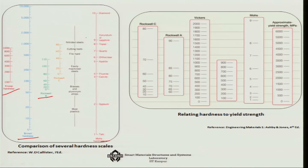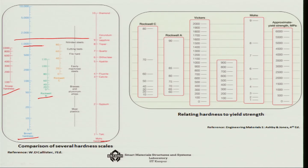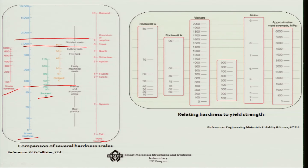For example, for nitrided steel, values are somewhere between 1000 to 1300 in the Vickers scale. In the Brinell hardness scale for cutting tools, the maximum value is around 700. For brasses, the Brinell hardness is somewhere around 70.